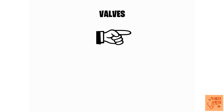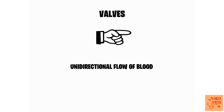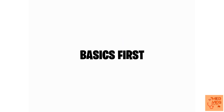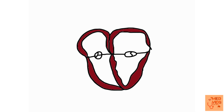Wherever valves are present in the body, their main function is to provide unidirectional flow of blood. When a valve cannot do this function it becomes incompetent, and the various valvular lesions happen. Now, the valves present between the atria and the ventricles are called atrioventricular valves, as you can see here.